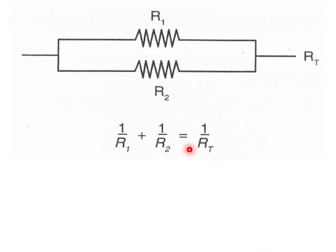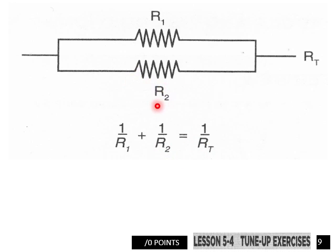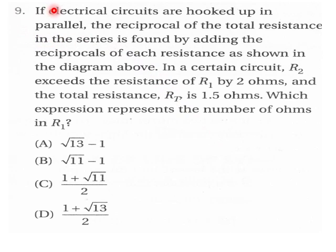Then we have this problem here, r1, r2, it goes to rt. Number nine: Electrical circuits are hooked up in parallel, and you go back into a kind of situation here. Which expression represents the number of ohms in r1? In a certain circuit, r2 exceeds the resistance of r1 by two ohms and the total resistance rt is 1.5 ohms.